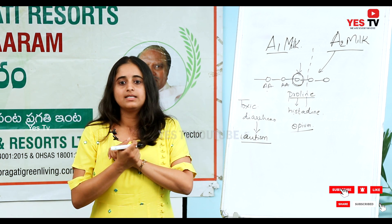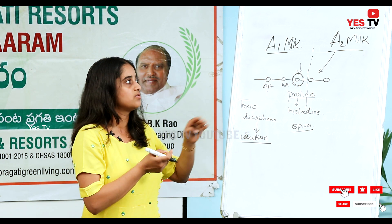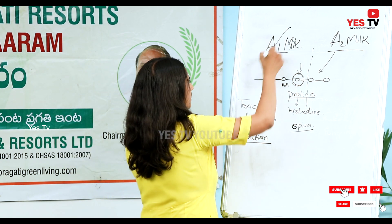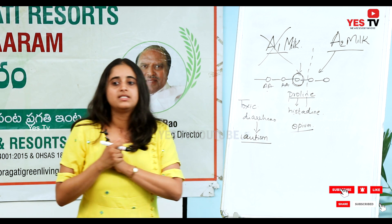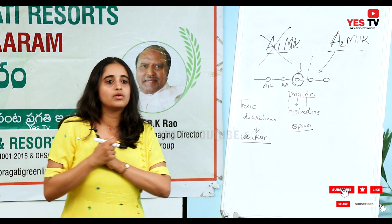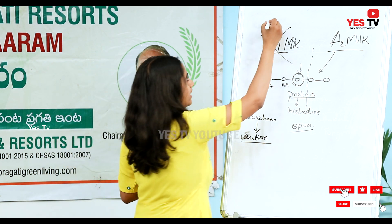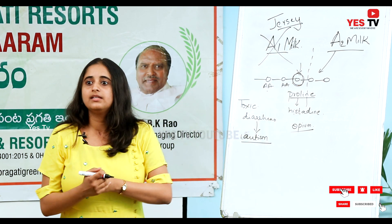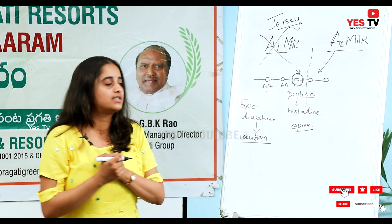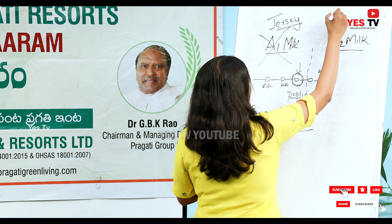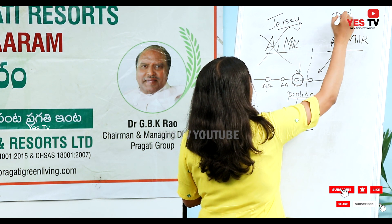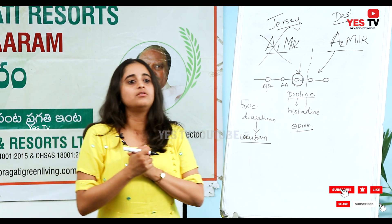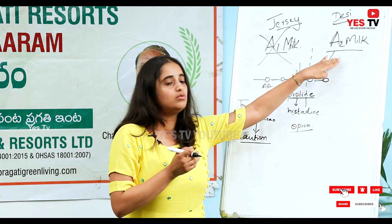So such serious effects can happen by consuming A1 milk, which makes it clear that A1 milk is not good for us. A1 milk is produced by jersey cows. In India, luckily we still have a few desi cows left, and desi cows produce A2 milk.